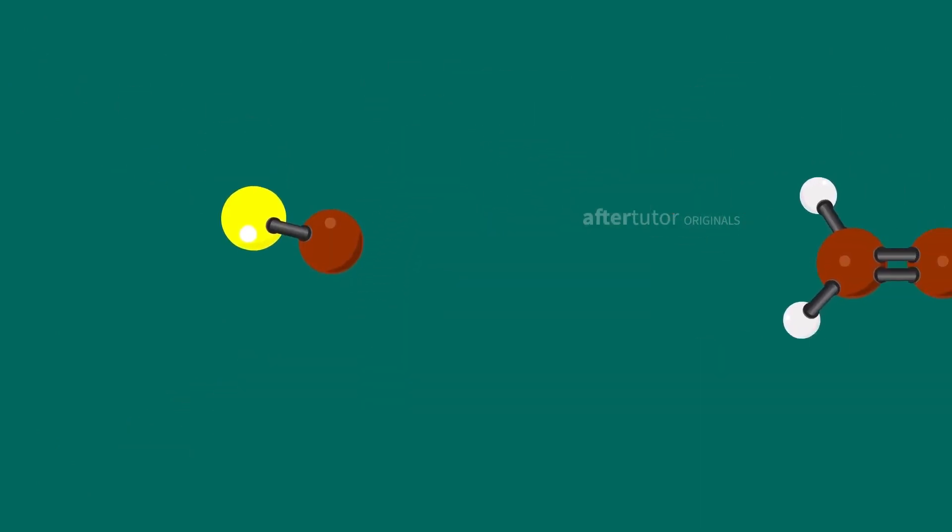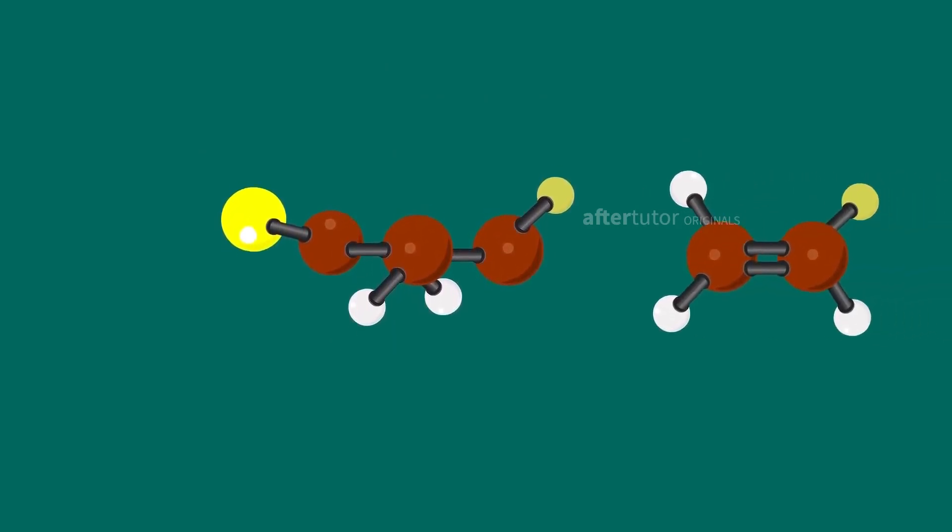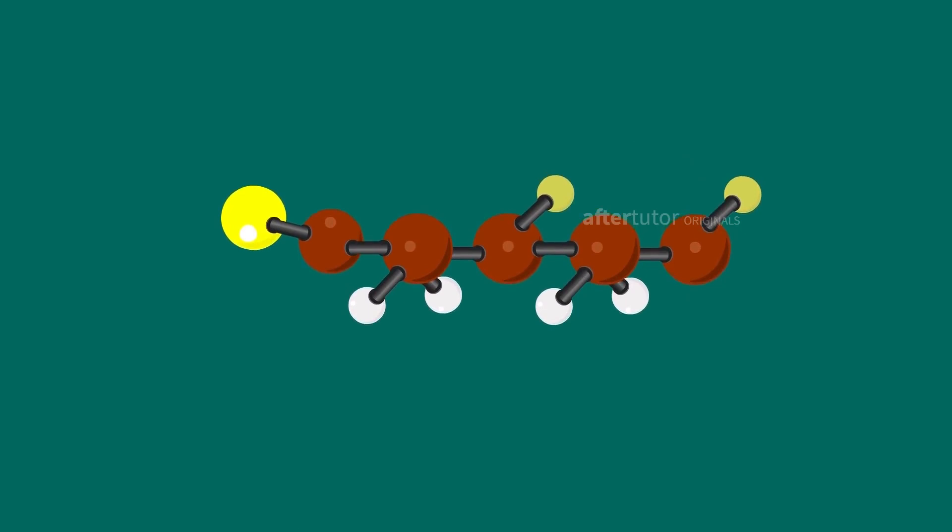Getting back to addition polymerization: monomers combine to form a polymer through addition reaction without elimination of any smaller molecules. This process is known as addition polymerization. For example, polyethylene.